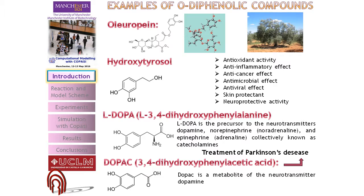Other compounds similar to o-diphenol are oleuropein and hydroxytyrosol. They are found in the leaves of olive oil and in the oils. They are used in extra virgin olive oil, have antioxidant properties, and an anti-cancer effect. Additional related compounds include L-DOPA and DOPA, which are metabolites of dopamine and can be used in the clinical treatment of Parkinson's disease.